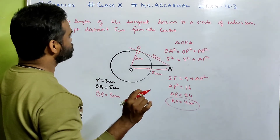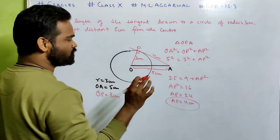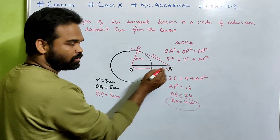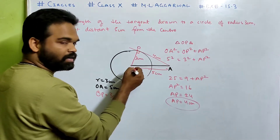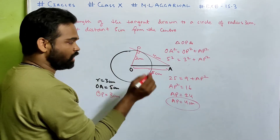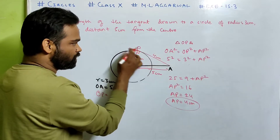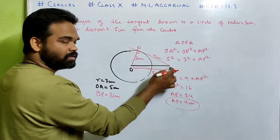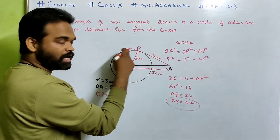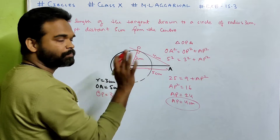Done — this was pretty easy. We just need to know that the tangent and the radius are perpendicular to each other at the point where the tangent touches the circle.